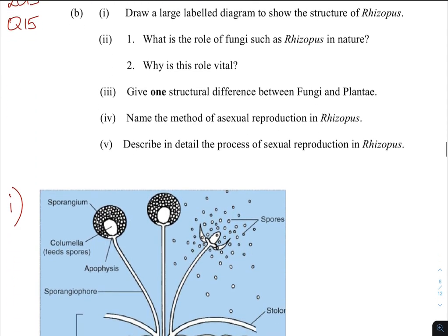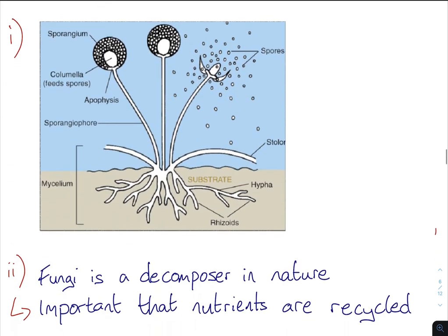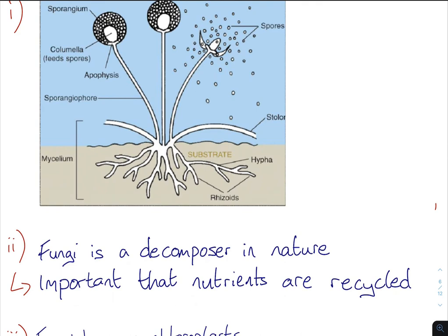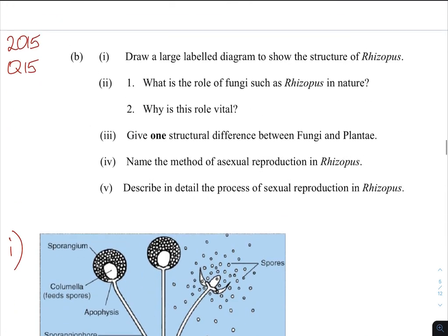2015: draw a large labeled diagram of Rhizopus — same business again. What is the role of fungi such as Rhizopus in nature? Recycling — it's a really good decomposer. We often refer to it as recycling nutrients. The role of Rhizopus is as a decomposer in nature, so that nutrients are recycled. This is so important because we only have a finite amount of nutrients.